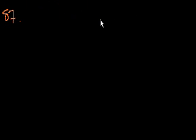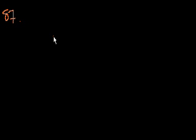We're on problem 87. An employee is paid 1.5 times the regular hourly rate for each hour worked in excess of 40 hours per week, excluding Sunday, and two times the regular hourly rate for each hour worked on Sunday — regardless of whether or not they're above 40 hours. How much was the employee paid last week?